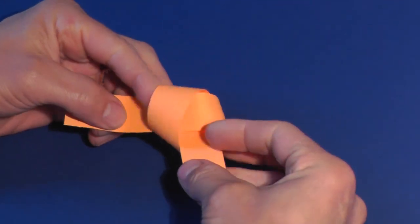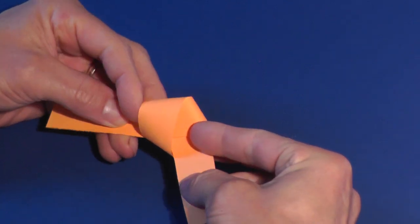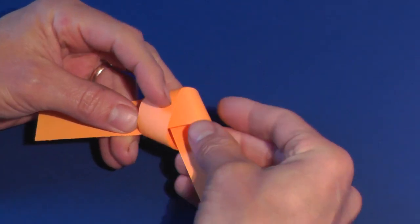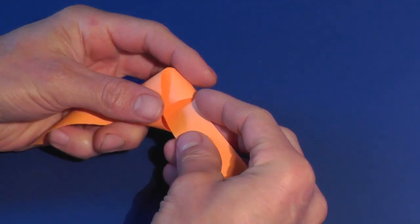An overhand knot is a criss-cross, tuck-under and pull knot that you use when you're tying your shoes. Carefully pull the knot tight and flatten it.